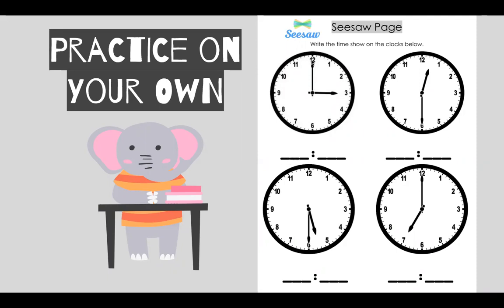Would I write 3:12? No. Remember, when the minute hand's pointing at the 12, it's o'clock. And when the minute hand's pointing at the six, it's 30.